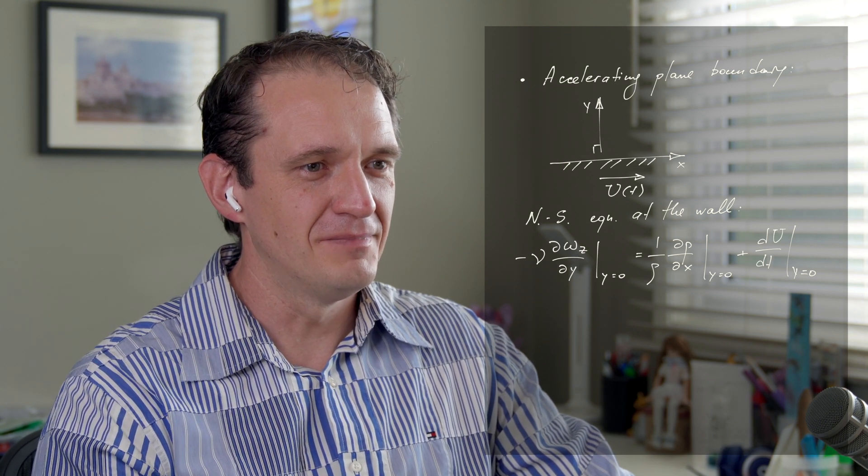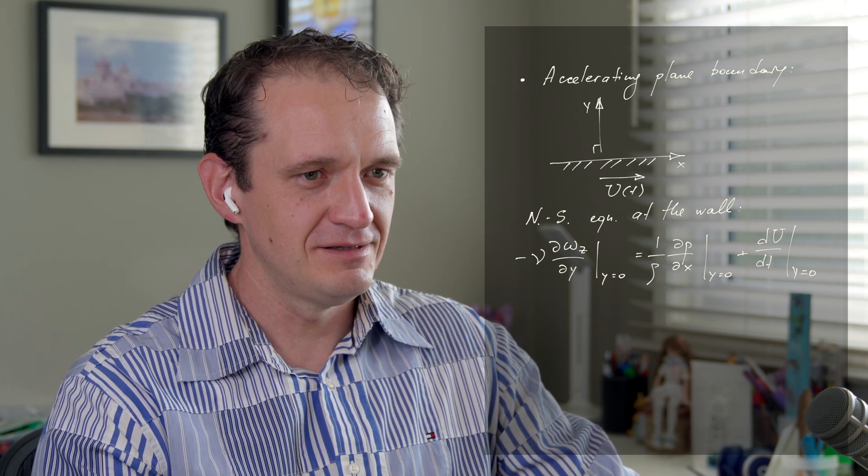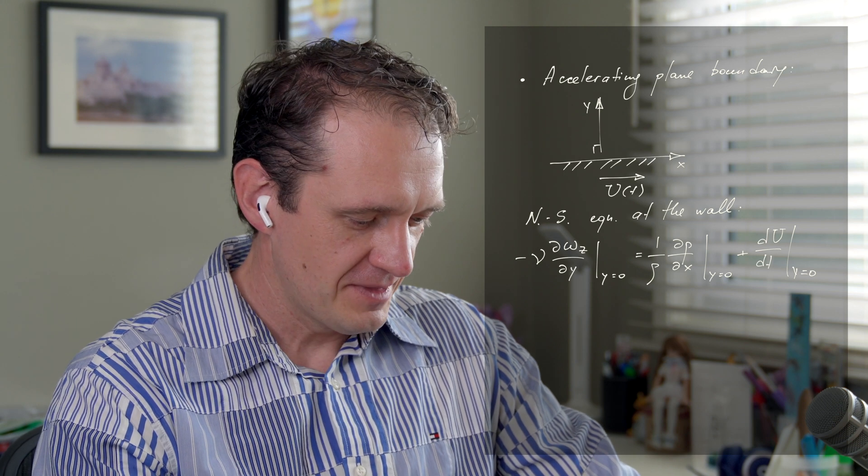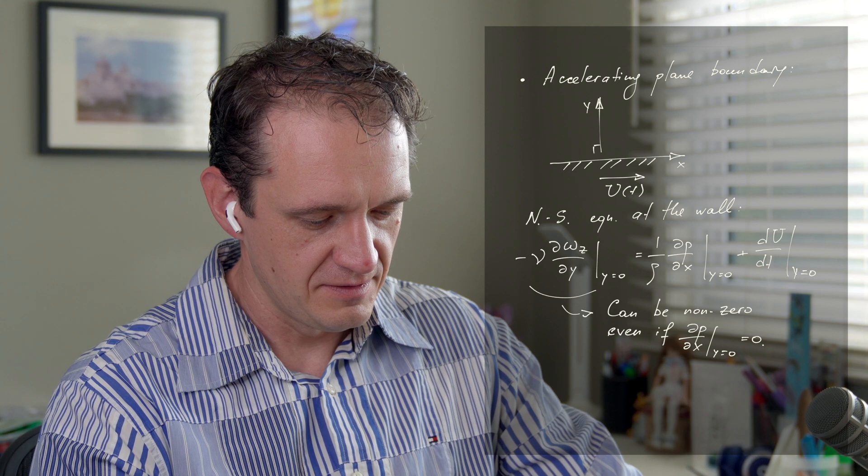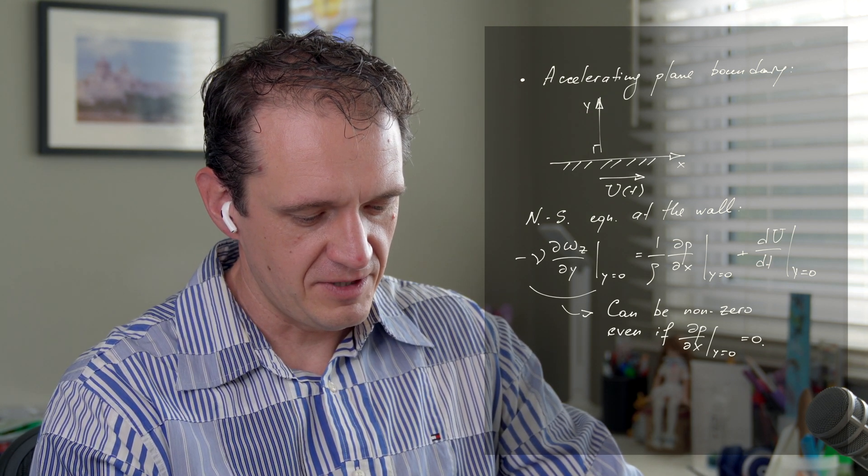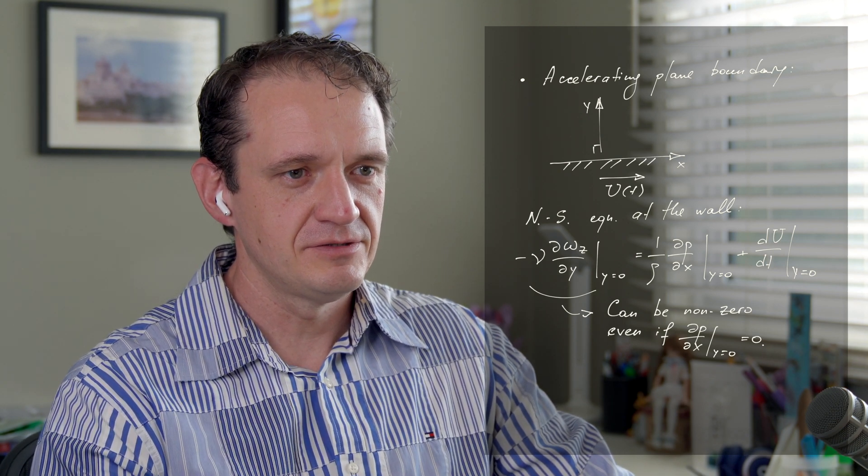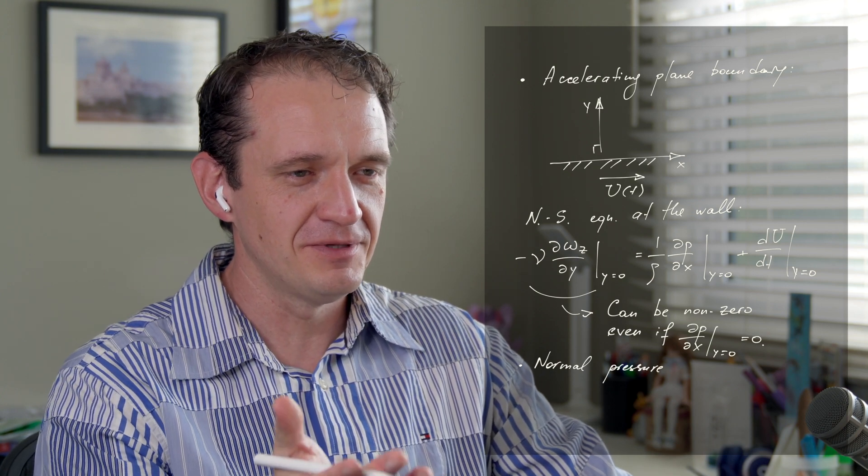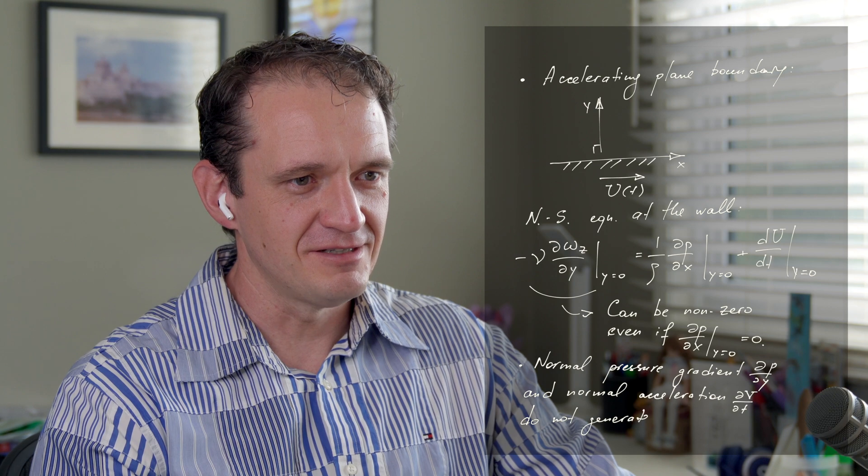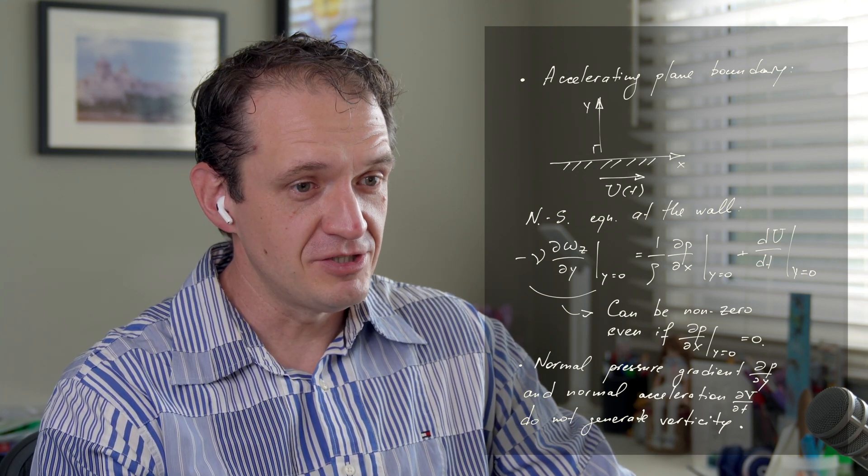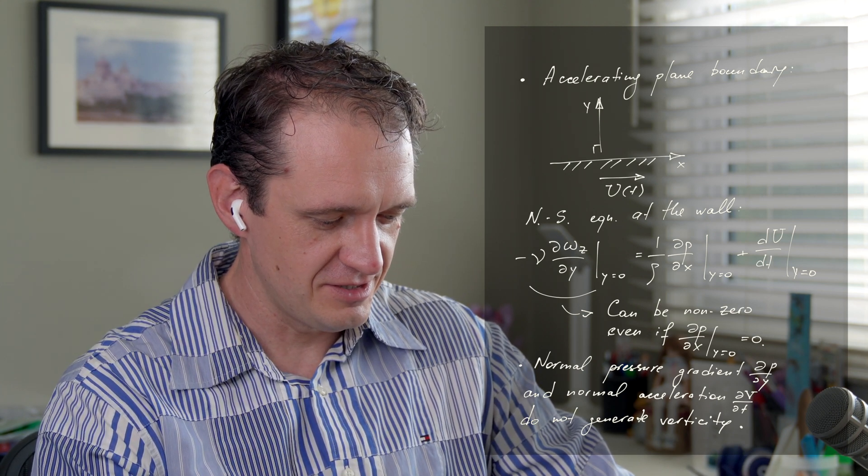When we're in this mindframe of looking at vorticity generation by moving surfaces, this actually is intuitive—it makes sense at least. I want to capture this note that we can have a non-zero flux of vorticity even if the pressure gradient is equal to zero. It's obvious from the equation: if the first term on the right is zero, the second could still be non-zero. I made this note that this plate moves in tangential direction. If the plate moves normal to itself—it just pushes the fluid up or down—it doesn't generate vorticity. It's only shear stresses on fluid elements that generate vorticity. Normal pressure gradient or normal acceleration do not result in any vorticity transport or production.